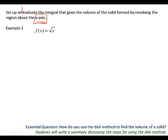Set up and evaluate the integral that gives the volume of the solid formed by revolving the region about the x-axis — they told us the axis. When doing a revolution, always start with pi every single time. Don't mix it up with cross sections from yesterday — for cross sections we don't write pi, unless it's a semi-circle.